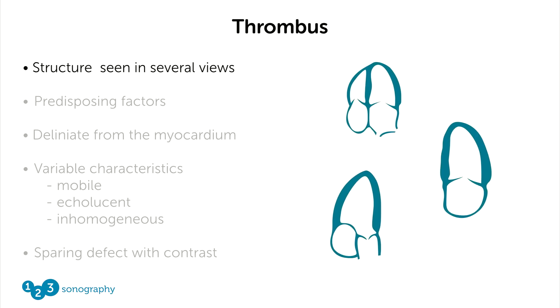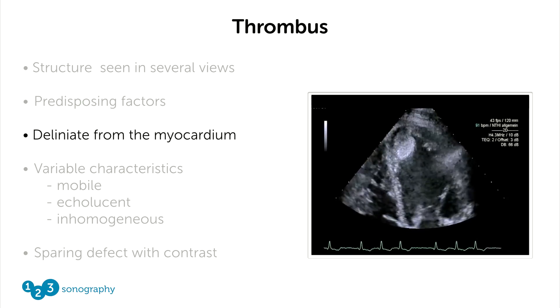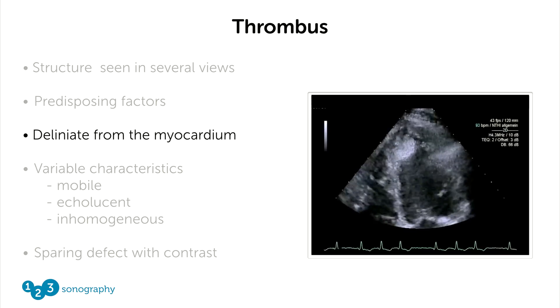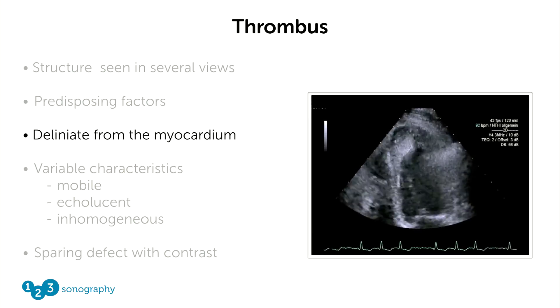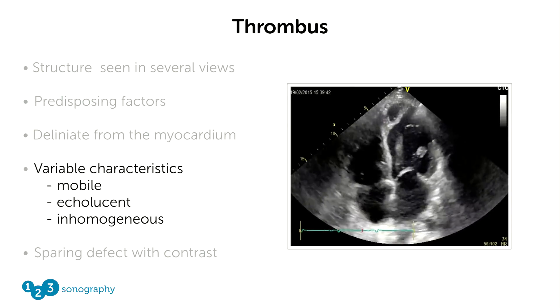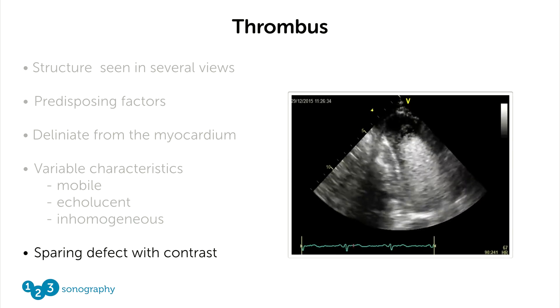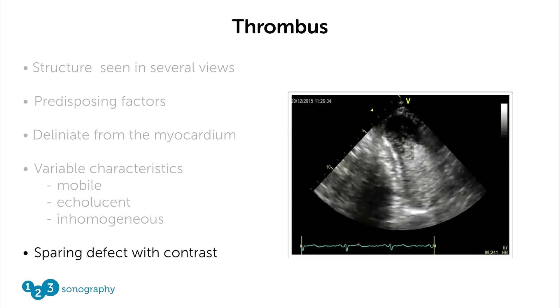Let's take a look at some of the very important facts you need to know if you want to diagnose a thrombus. First, you need to see the structure in several views. You should look at predisposing factors — we already talked about wall motion abnormalities, but patients with poor left ventricular function are at increased risk. You should be able to delineate the thrombus from the myocardium so you don't mistake it for a papillary muscle. The thrombus can have variable characteristics: mobile, echolucent if fresh, or inhomogeneous. Finally, use contrast — you will be expecting a sparing defect.